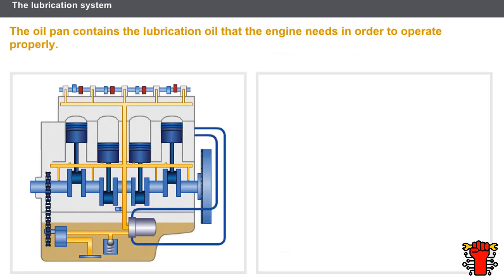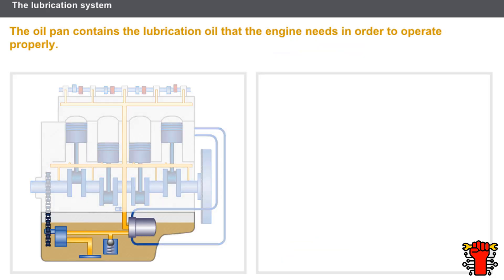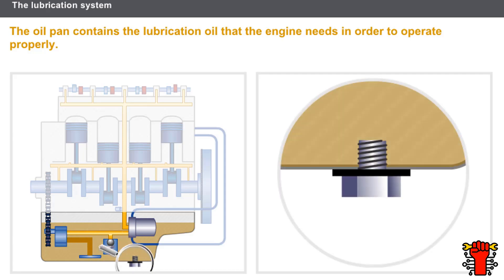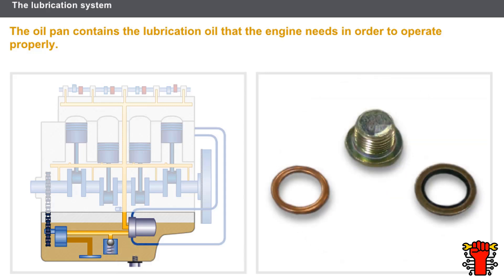The oil pan contains the lubrication oil for the engine. The oil pump pumps the oil from the oil pan. The oil pan has a cap with a special gasket for oil changes. The oil pan gasket on the cap must be replaced after each oil change. Consult the technical documentation to find out the part number for the oil pan gasket.